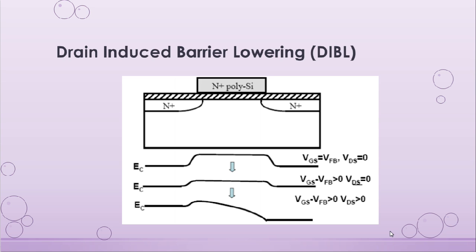Let us now try to understand the first short channel effect — drain induced barrier lowering. We have a short channel transistor and three energy band diagrams, each corresponding to increasing gate and drain voltages respectively. As we can see in the second energy band diagram, the gate voltage increases and the potential barrier has been pushed down, so electrons are able to overcome this barrier more easily and flow from source to drain. When a drain voltage is applied, as in the third energy band diagram, the entire topography of the band diagram has changed and now electrons are able to overcome this potential barrier irrespective of the gate voltage. This phenomenon is known as drain induced barrier lowering.